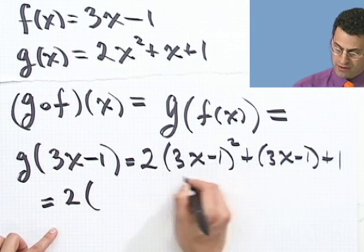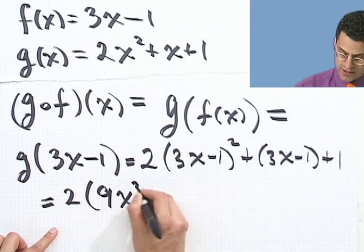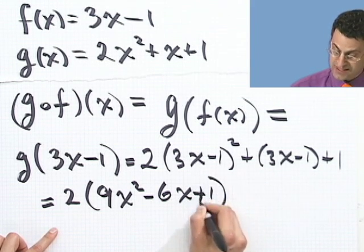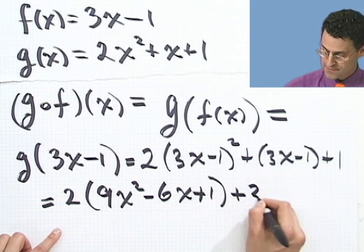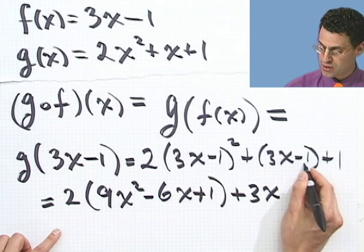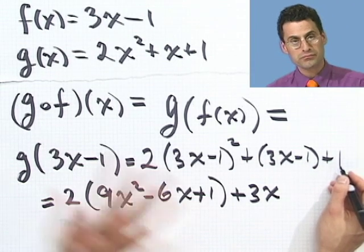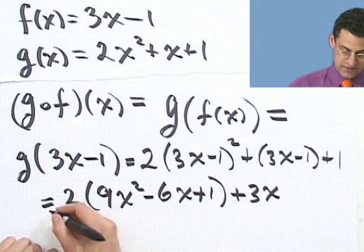So it'll be 2 times, if I square that out, I'll get 9x squared minus 6x plus 1. I did that really fast. And then I have a minus 1 plus 1, they drop out, I just get 0. And if I distribute the 2,